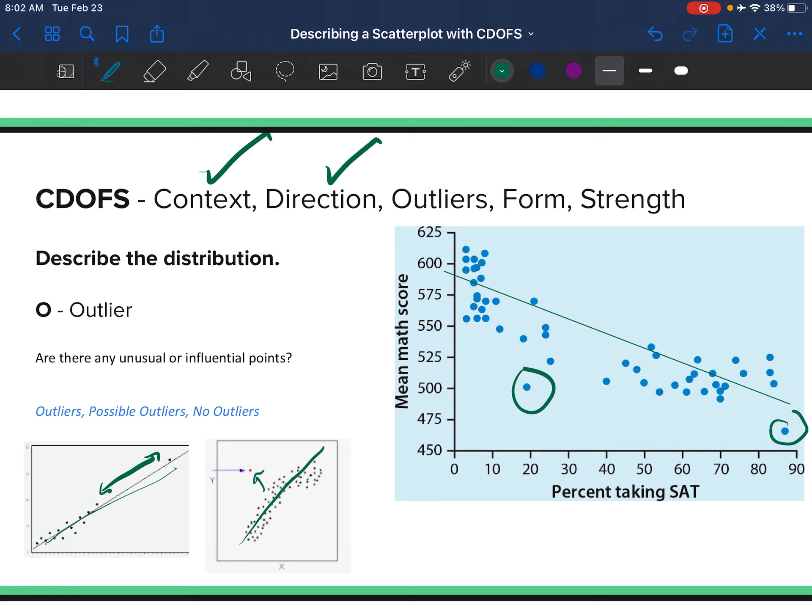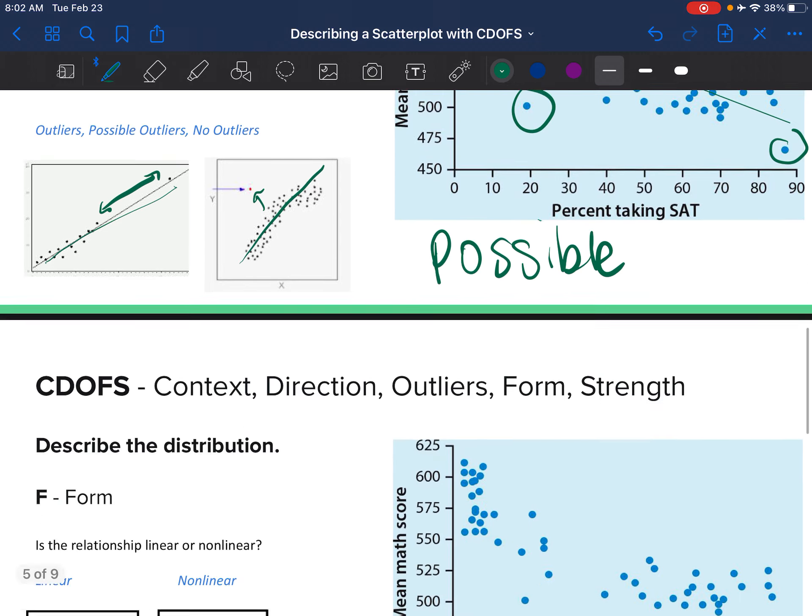If I draw my line here and ask if there's an outlier, chances are this and this point maybe are outliers. We don't know, so we're going to use the word 'possible.' It looks like they could be outliers. We would have to do some calculations to determine if it's a true outlier, but we can say 'possible' for right now.